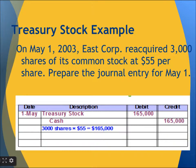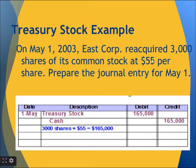Let's see an example to understand more. On May 1, 2003, East Corp reacquired 3,000 shares of its common stock at $55 per share. The general entry on May 1 will show that it reacquired treasury stock. $55 multiplied by 3,000 gives us $165,000. So $165,000 in treasury stock is debited and $165,000 in cash is credited.